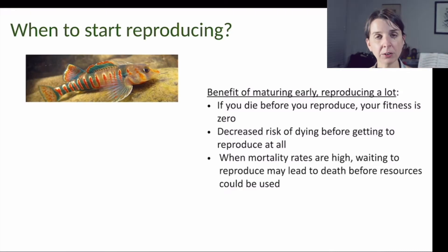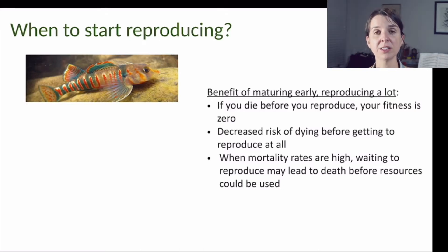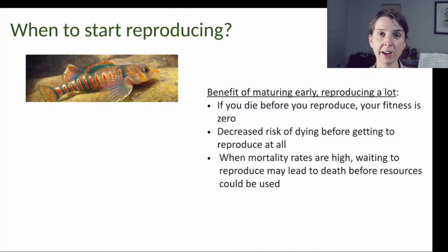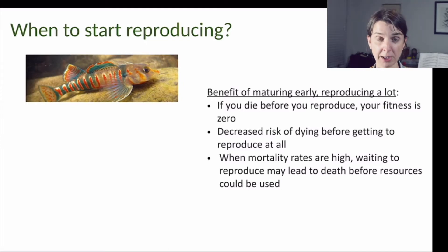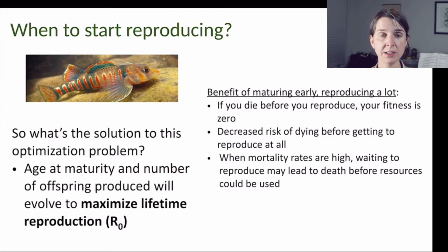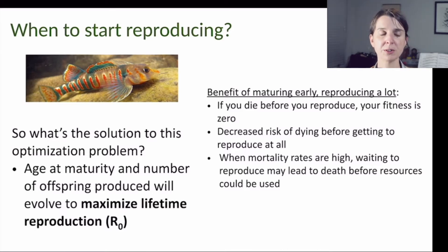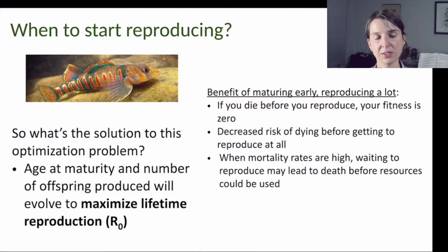This is particularly important when mortality rates are really high. When mortality rates are high, adults have a higher chance of dying before they reproduce, and that tends to cause selection for an earlier age of first reproduction — an earlier age at maturity. So what's the solution to these optimization problems? When should we mature and begin reproducing? How many offspring should we produce? In all these cases, the answer is whatever is going to maximize the lifetime reproductive output, or the net reproductive output.